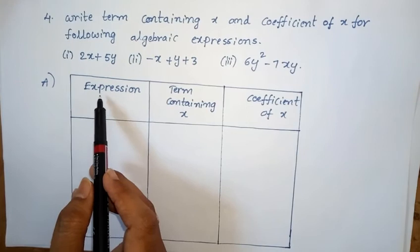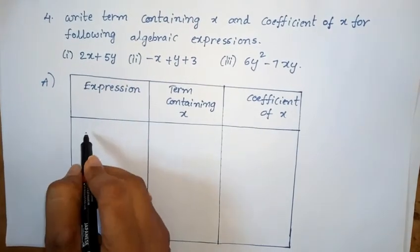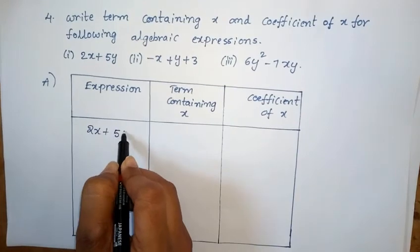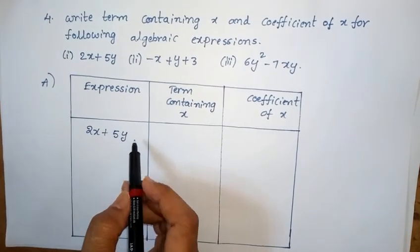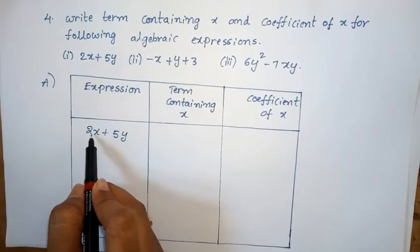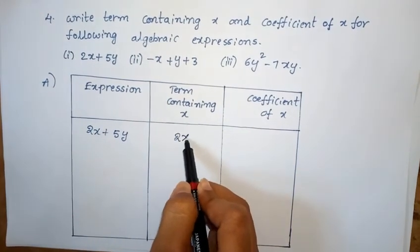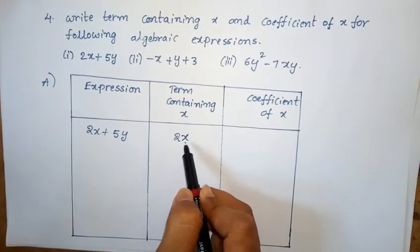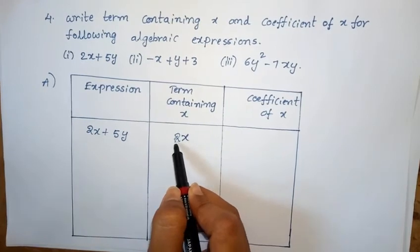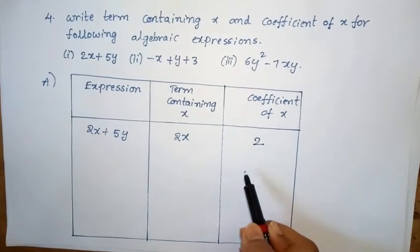First expression: 2x plus 5y. The term containing x is 2x only. So the coefficient of x is 2.